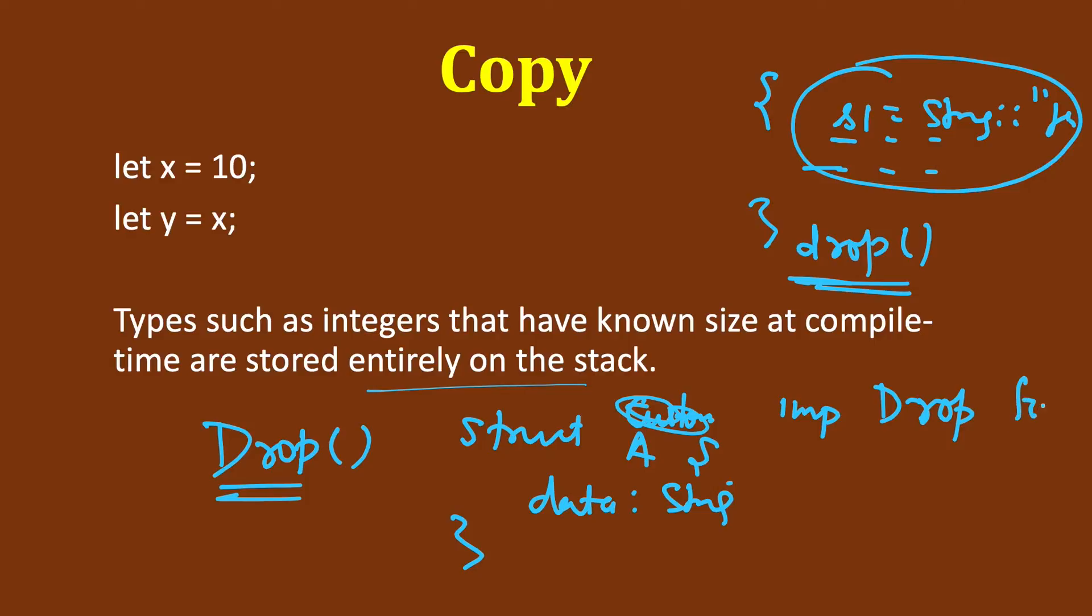If we define a drop trait for any variable and again we try to define a copy trait for that, then it will be a compile time error and we will not be allowed to do that. This was just a heads up information on copy.